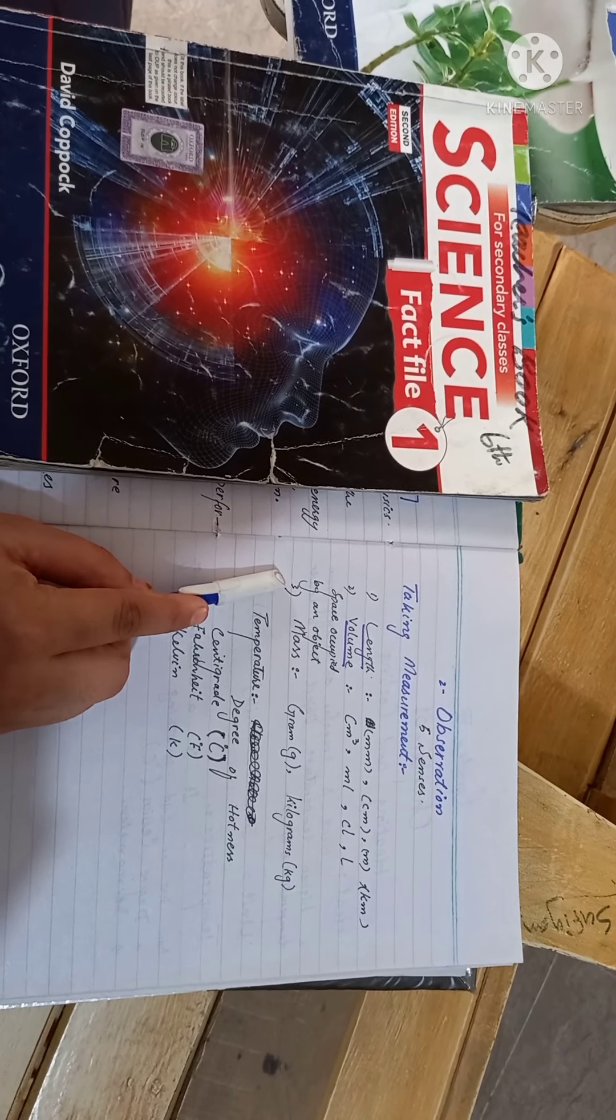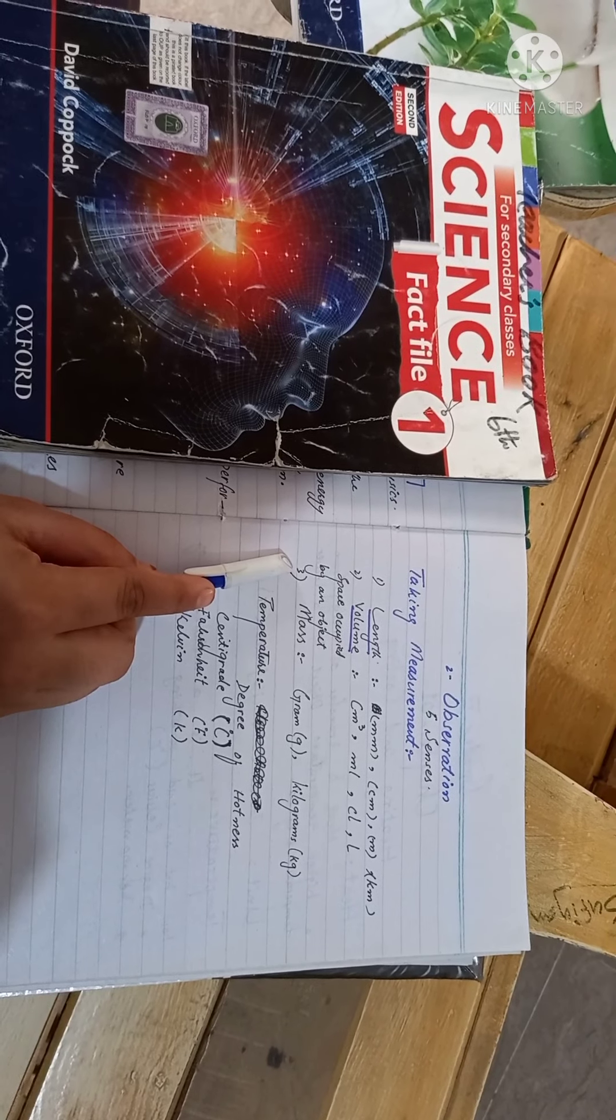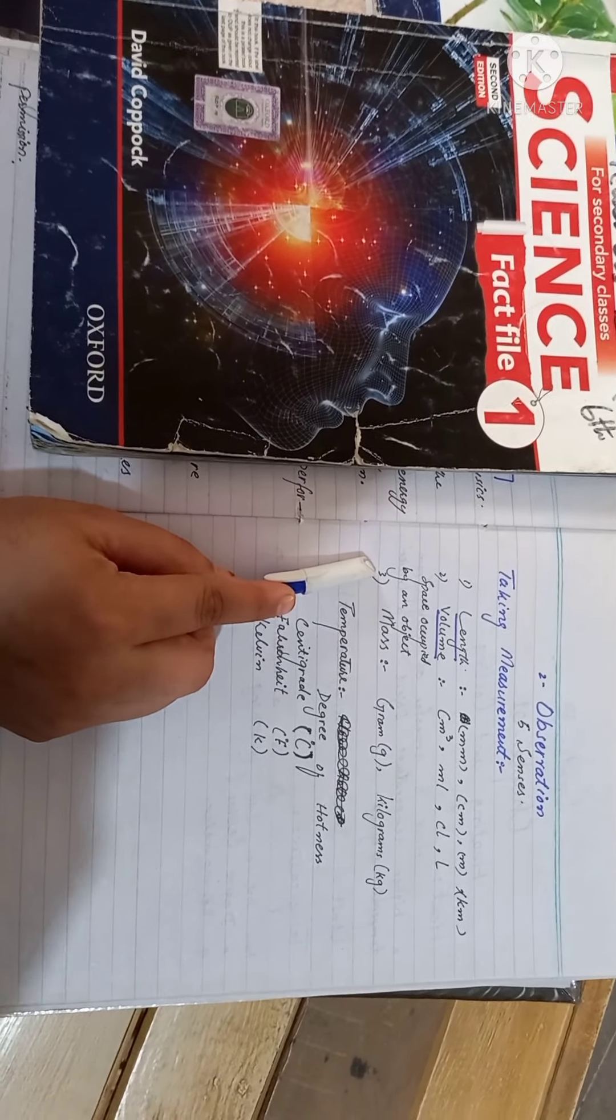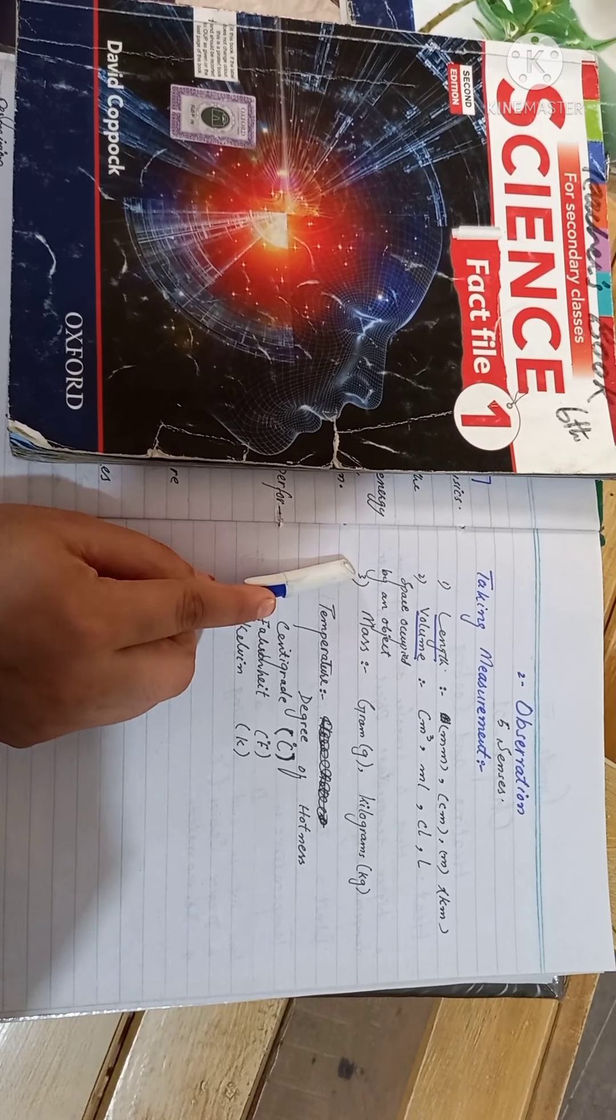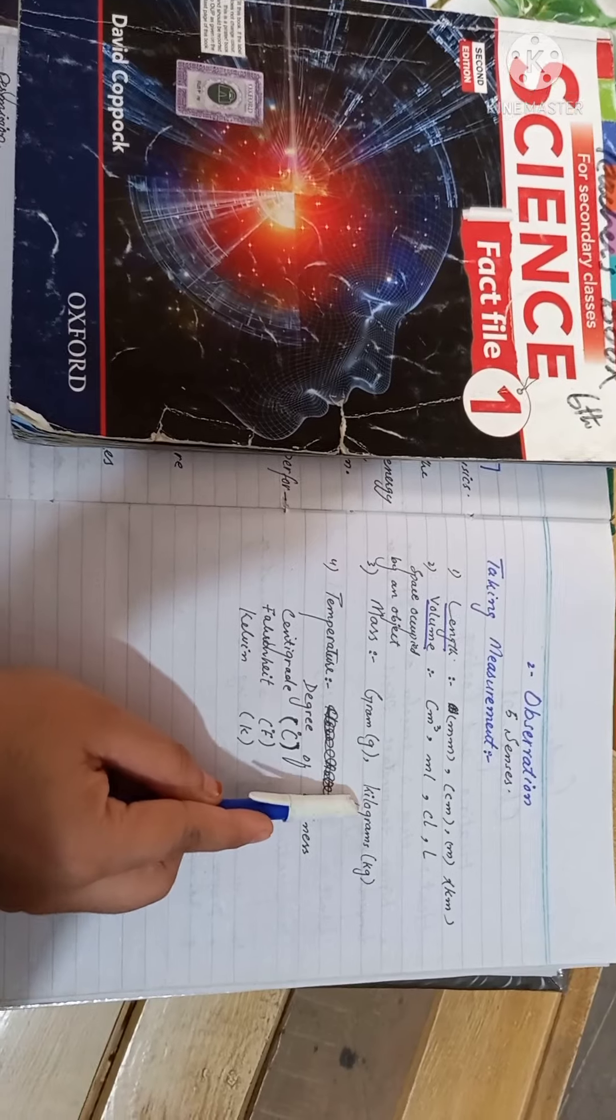Then the next thing you have to know in measurement is mass. Mass means weight machine, different weight objects. Mass unit is gram and kilogram.